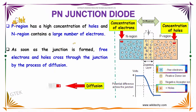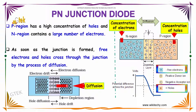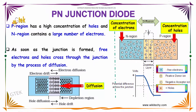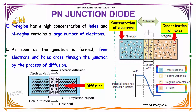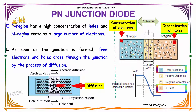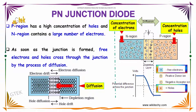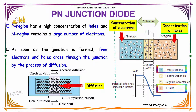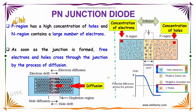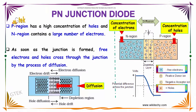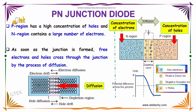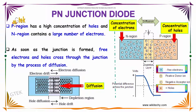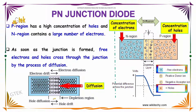The P region will be having a high concentration of holes, positive. And the N region will be having a large number of electrons. As soon as the junction is formed, free electrons and holes cross through the junction by the process of diffusion. This region is called the depletion region.